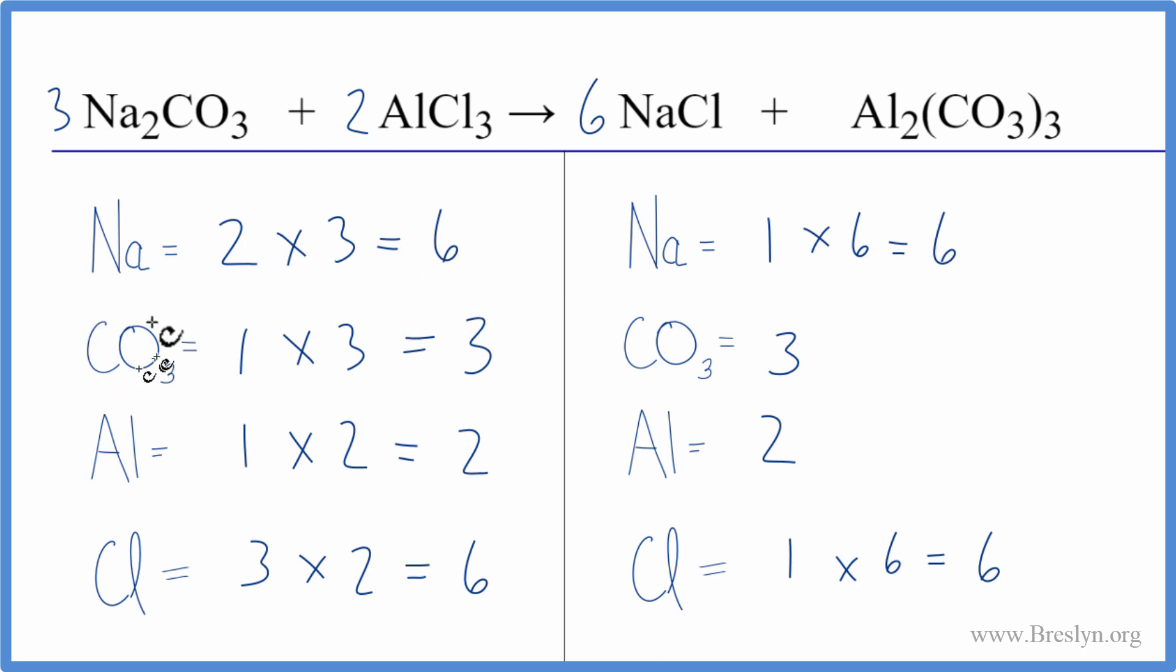So by counting these polyatomic ions as just one item it just makes it a lot simpler when you balance. As long as you have them on both sides of the equation it works. Either way you get the same answer.